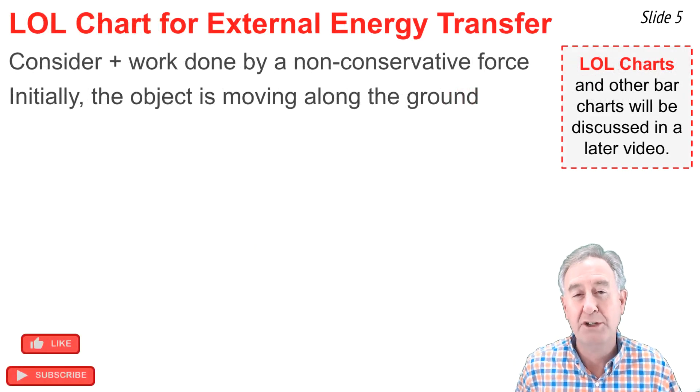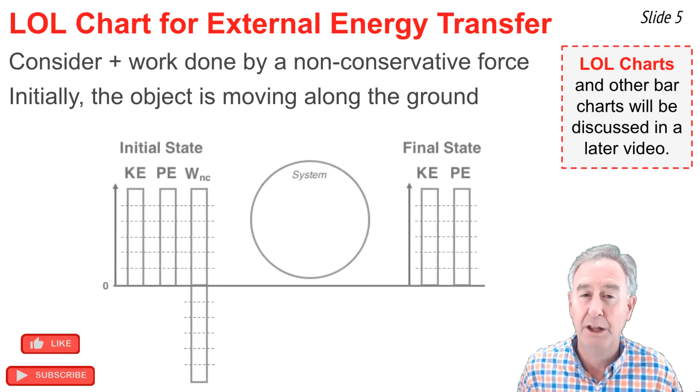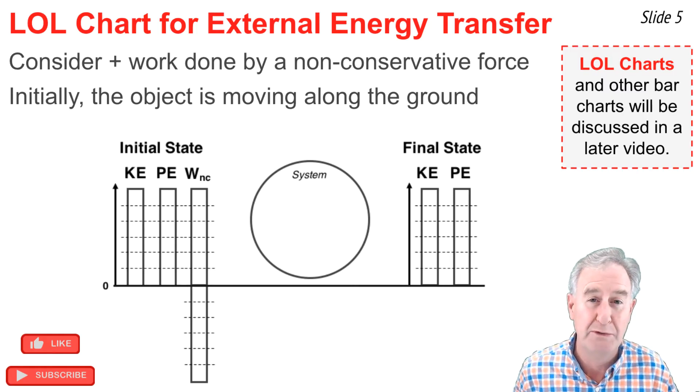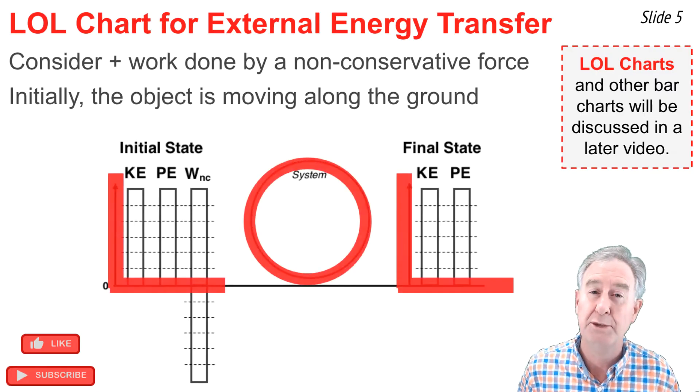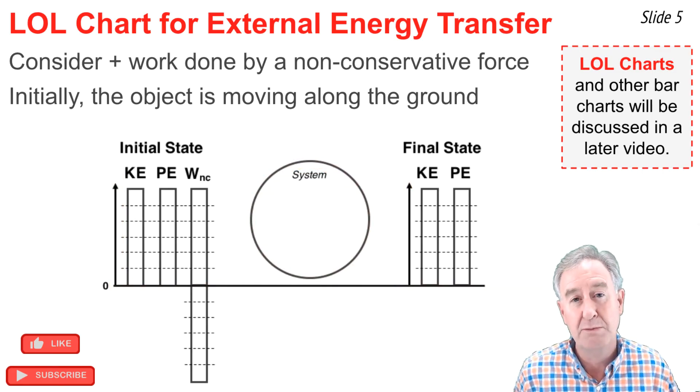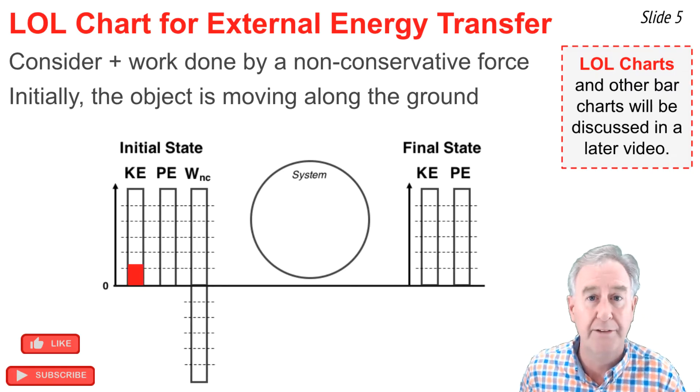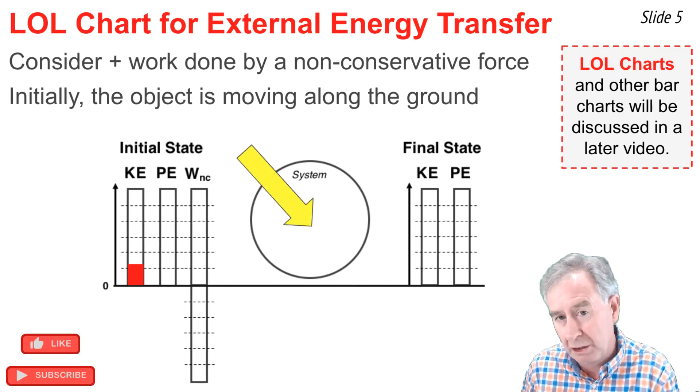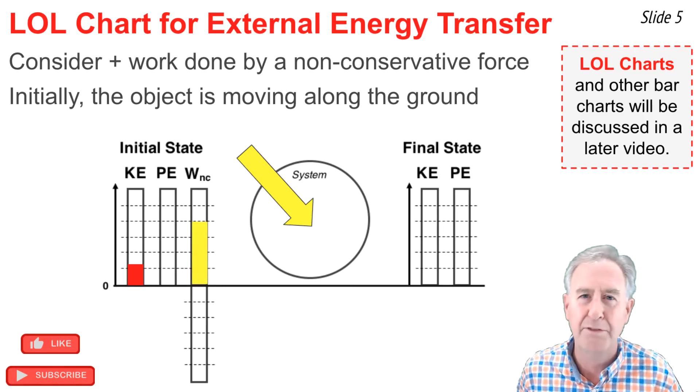Let's consider the case in which a non-conservative external force is doing positive work upon a system which is initially moving along the ground. Let's represent what happens with what's called an LOL chart. This is a conceptual tool that we use to demonstrate what form of energy the object or system has and how it changes over time. You might be wondering why they call it an LOL chart, and it's because one day somebody realized that the axes and the system circle spell LOL. So this object initially is moving along the ground. It's got no potential energy because it's on the ground and it's moving, it's got kinetic energy. I'll show about one bar of height there. And work is done by a non-conservative force and it's positive work, so it gives energy to the system. On the bar chart, I'm going to show a positive bar, I'll make it four units high.